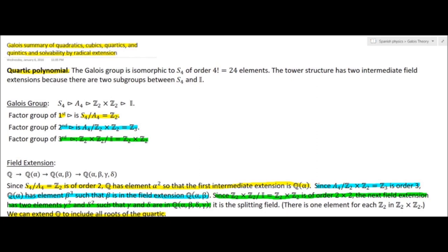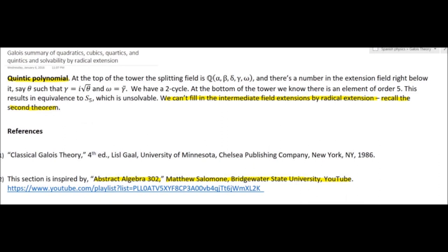For the quintic, at the top of the tower a splitting field would require numbers α, β, δ, γ, and ω extending the rationals to contain all solutions. The problem is that when we have complex roots connected by a 2-cycle of complex conjugation and one of the roots is a cycle of order 5, we immediately know its Galois group is isomorphic to S5 — and we can't reach the intermediate field extensions by radical extension.